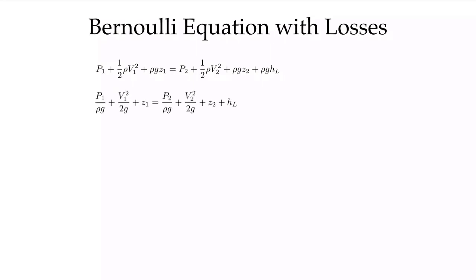These losses — I can divide this whole expression by rho*g, as we often did in module 5 — and we can see that h_l is always going to be positive. It's due to losses. Friction cannot add energy to the flow; it can only take energy away, and therefore we have to use it to make up the difference in energy at points 1 and 2, because now we've had losses.